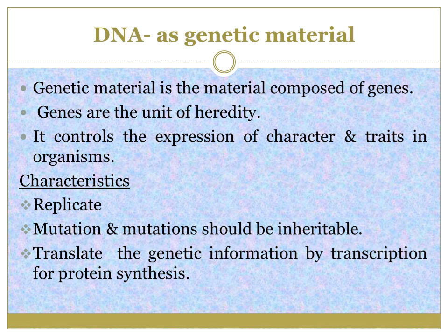DNA as a genetic material — genetic material is a material composed of genes. We all know that genes are the unit of heredity, and the characters are transferred from parents to offspring. It helps to control the expression of characters and traits in an organism. If a material is a genetic material, it should have the following characters: first, it should be able to replicate so it can transfer to daughter cells; second, mutation — the genetic material is very stable, but if it undergoes mutation it should be inheritable; third, it should have the capacity to translate genetic information and transcribe for protein synthesis.